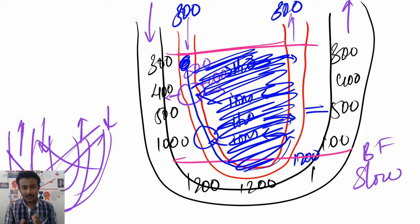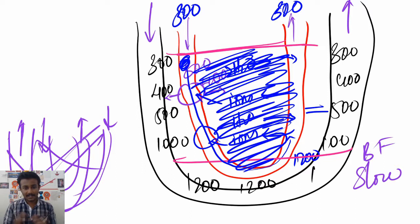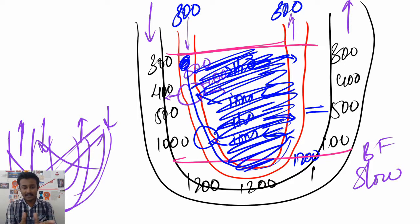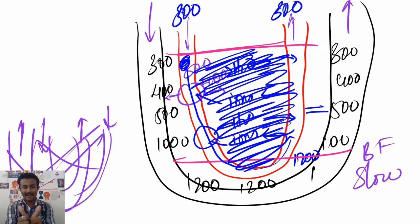That's how the gradient is maintained by the vasa recta. So that was the entire counter-current mechanism - the exchanger and the multiplier. Hope you guys understood it. If there's any doubt please comment below and I'll be glad to clarify. Just like this lesson was requested by Tejas, you can also request any topic you'd like me to make a video on. Thank you for watching, subscribe, like, and I'll see you in my next video. Bye.